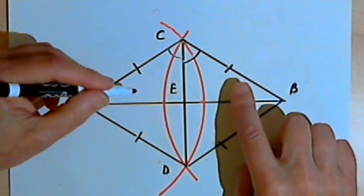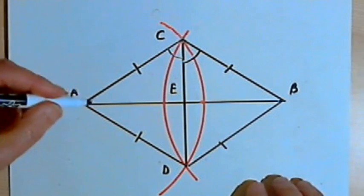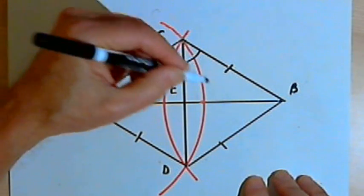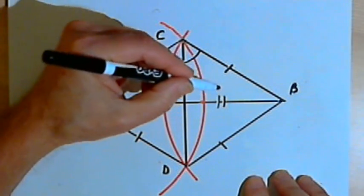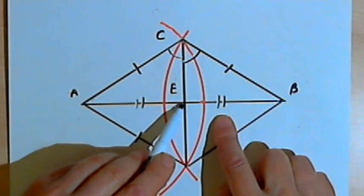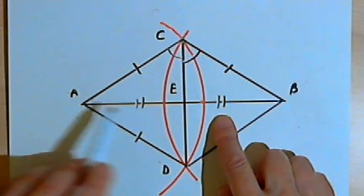Now if those two triangles are congruent, then AE is congruent with BE. This means that point E is bisecting line segment AB.